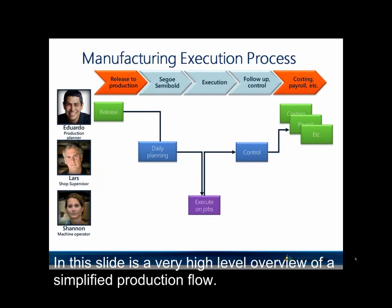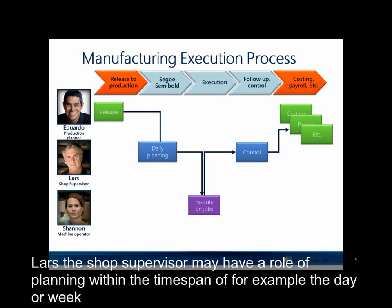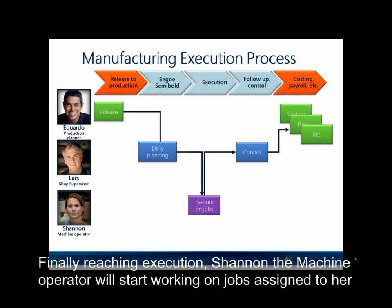In this slide is a very high level overview of a simplified production flow. Coming from the upper left corner, Eduardo, the production planner, will be releasing a number of production orders into the production floor. The job supervisor may have a role of planning within a time span of, for example, a day or week. This would involve prioritizations and job assignments based on an understanding of worker and materials availability, machine status, etc. Finally reaching execution, Shanna, the machine operator, will start working on the jobs assigned to her.